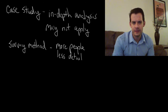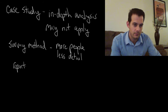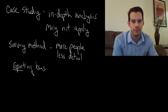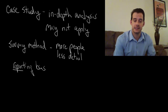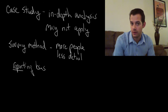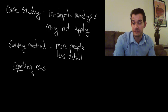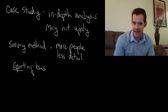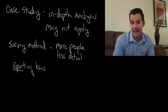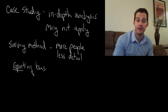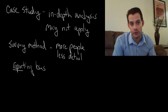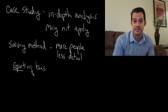Another problem with the survey method is what's known as reporting bias. Reporting bias refers to the people that report back to me with survey results — there might be something different about them that is influencing my results. For instance, if I conducted a survey on happiness and gave thousands of people a questionnaire, what might happen is that only happy people take the time to fill it out and send it back. People who are depressed might see the survey and not bother. So when I collect all my data, I'm only getting scores from happy people, and I'm going to think that on average people are happier than they actually are. That's reporting bias, and it's another problem with the survey method.